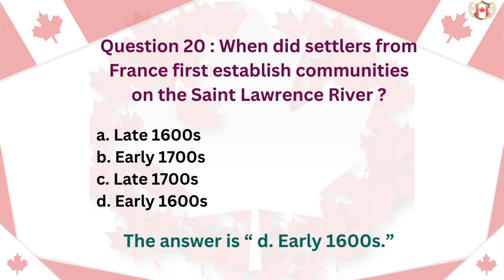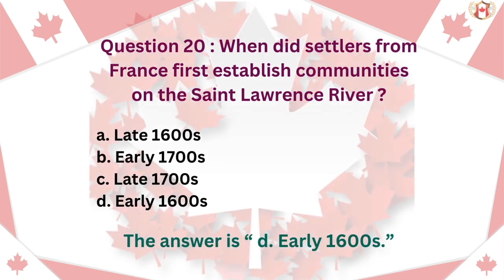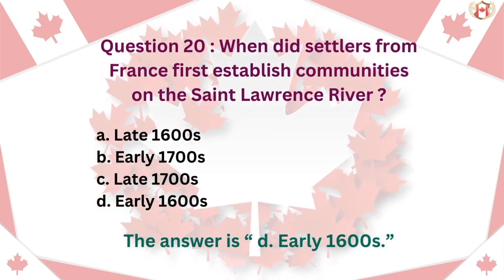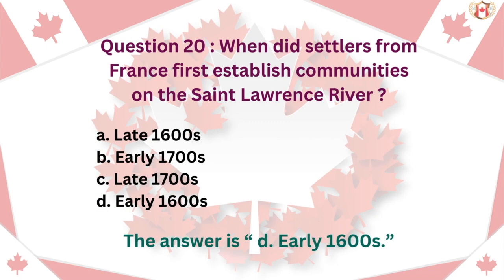Question 20: When did settlers from France first establish communities on the St. Lawrence River? A. Late 1600s, B. Early 1700s, C. Late 1700s, D. Early 1600s. The answer is D. Early 1600s.